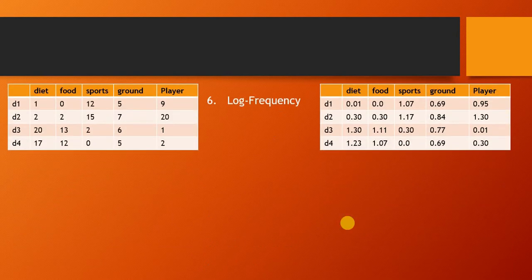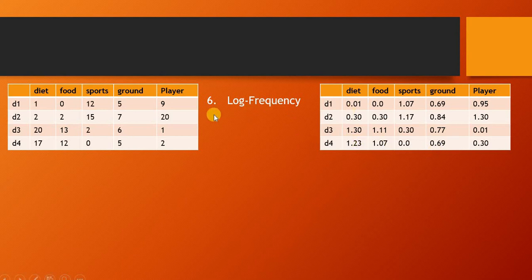Some other frequently used approaches are the log frequency, which dampens the higher values of frequency. If you see 'player' is occurring 9 times in document 1 and 20 times in document 2, if we see over here, the difference between the two is being dampened.